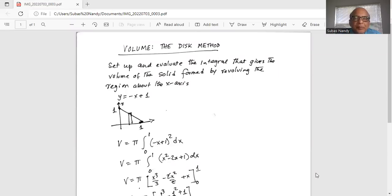Volume: the disk method. Set up and evaluate the integral that gives the volume of the solid formed by revolving the region about the x-axis. Y equals negative x plus one is the boundary line. It has a negative slope of one and a y-intercept of one.